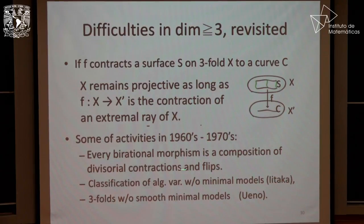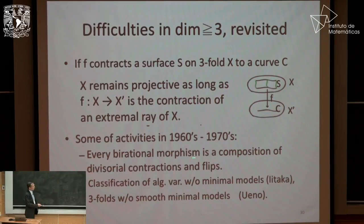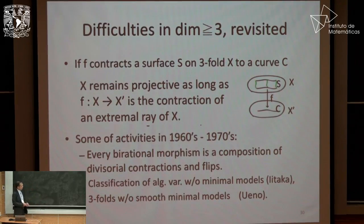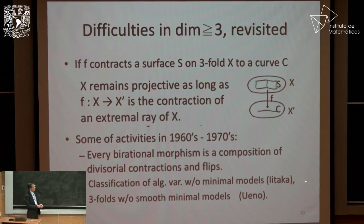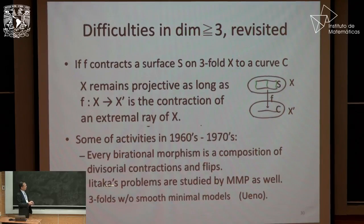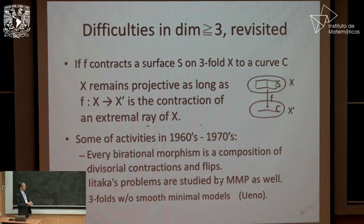Hironaka's example was not decomposable into standard blow-ups. But in terms of the Minimal Model Program, the relative Minimal Model Program shows you that every birational morphism is a composition of divisorial contractions and flips. For classification of algebraic varieties without minimal models, there is Iitaka's theory — he came up with several conjectures, and those problems are now studied using MMP.